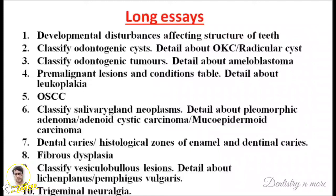The fourth important question you must know is: what are the pre-malignant lesions and what are the pre-malignant conditions? That particular tabular column is given in Shafer's textbook, 8th edition as well as 9th edition. Just look into the pre-malignant lesions and conditions table, and learn in detail about leukoplakia — its histopathology, the diagram — everything must be very thorough.